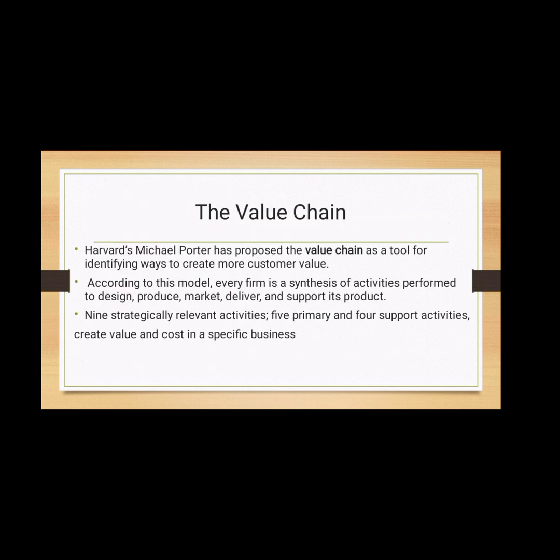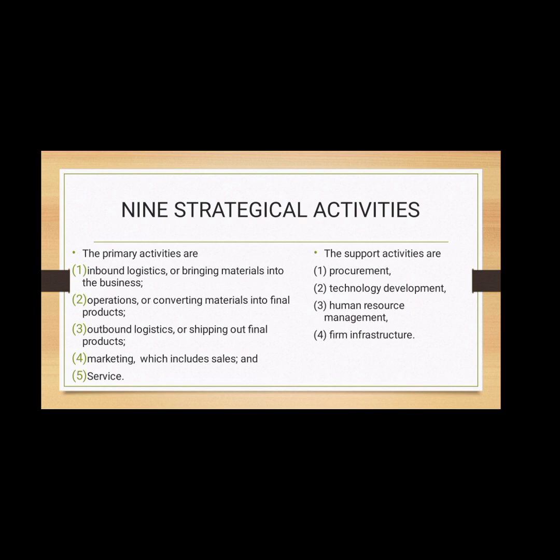The value chain is a tool for identifying ways to create more customer value, proposed by Michael Porter. It describes all the business activities it takes to create a product from start to finish — for example, design, production, distribution, and so on. According to this model, there are nine relevant activities: five primary and four support activities. The primary activities are: inbound logistics (bringing material into the business), operations (converting material into final products), outbound logistics (shipping out final products), marketing and sales, and service.